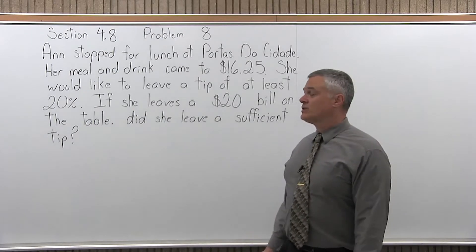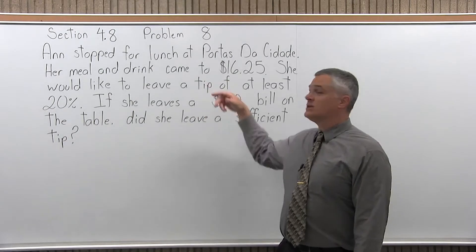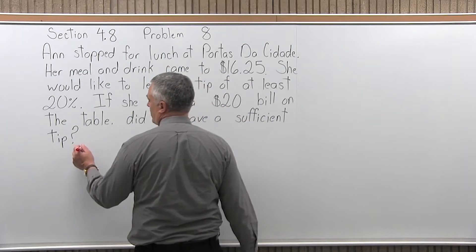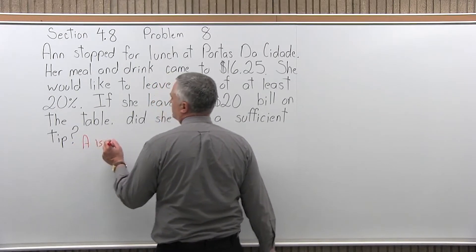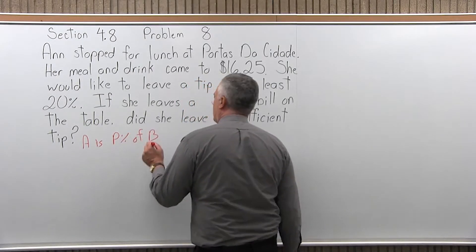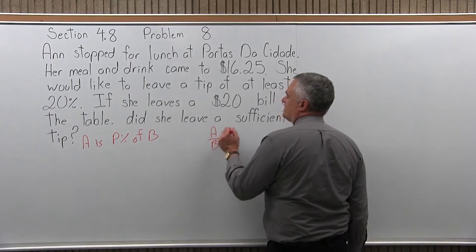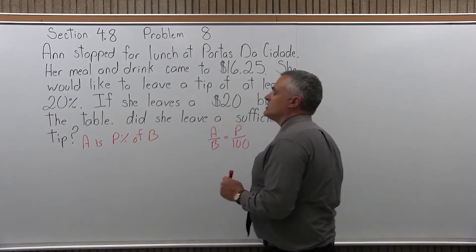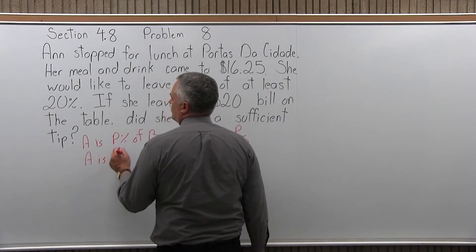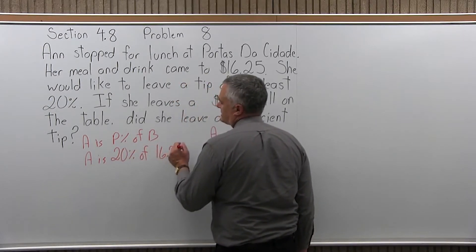First let's find out what a 20% tip would be and then see if the difference between the $20 and the cost of the meal exceeds that amount. The way I like to approach most percent problems is try to rewrite the important parts into the sentence A is P percent of B. And if I can, then I use the formula A over B equals P over 100. So, A is the tip I'm looking for is 20% of the cost of the meal, $16.25.